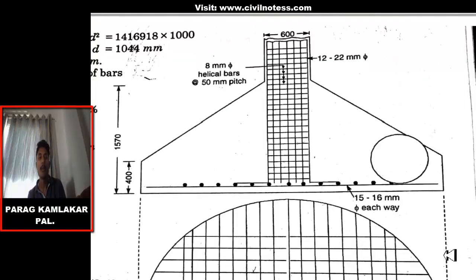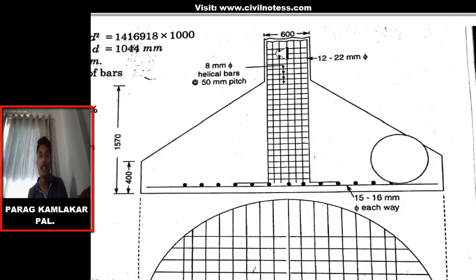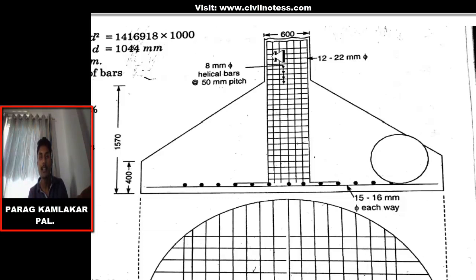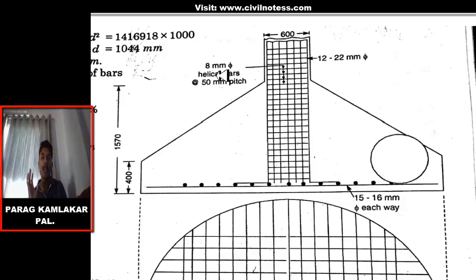Looking at the diagrammatic representation: the footing is at the bottom and the circular column sits above it with 600 mm diameter. The clear cover shown is 50 mm. We have provided 12 bars of 22 mm diameter as vertical longitudinal steel. The helical bars are 8 mm diameter rings with a pitch of 50 mm.